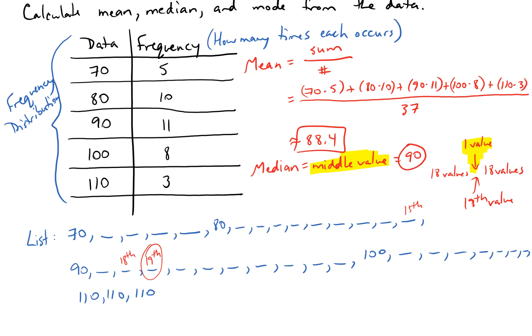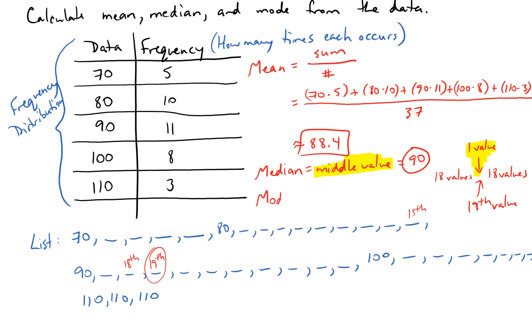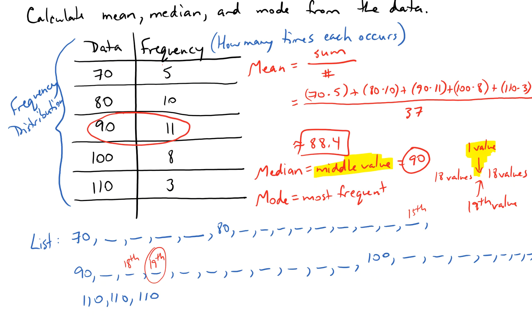Finally, mode. Mode is the value that shows up most, so most frequent. That's the easiest. In this case, 90 shows up 11 times, so 90 is also my mode.